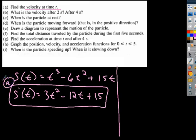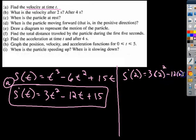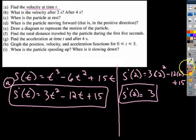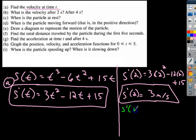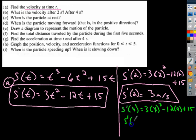Part B asks: what is the velocity after 2 seconds and after 4 seconds? To find velocity at 2 seconds, plug T = 2 into the derivative: 3(2)² − 12(2) + 15 = 3 meters per second. For 4 seconds, plug in T = 4: 3(4)² − 12(4) + 15 = 15 meters per second.